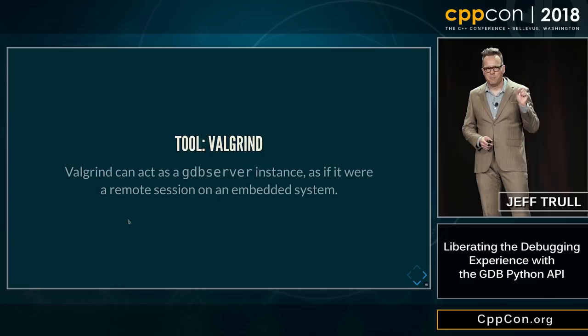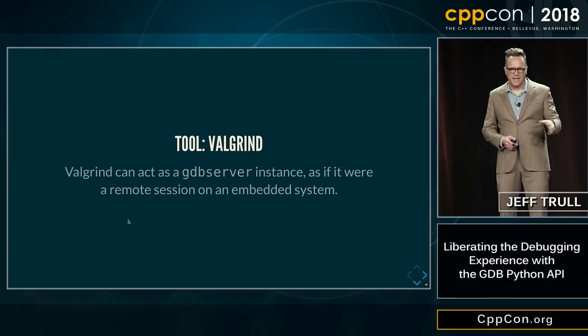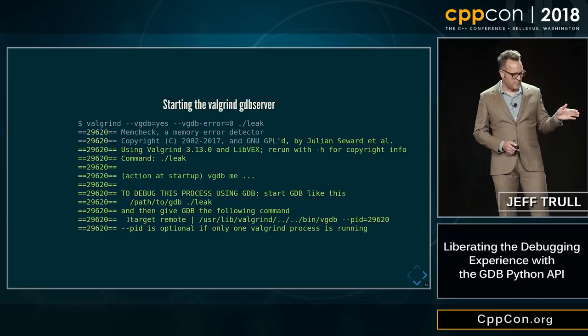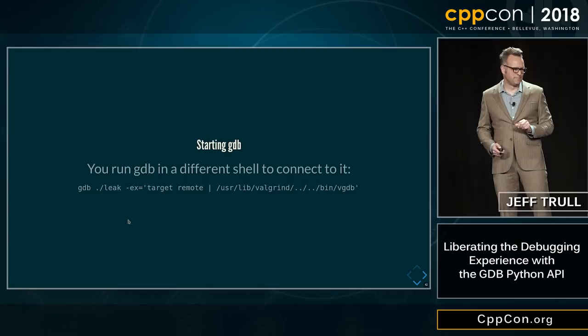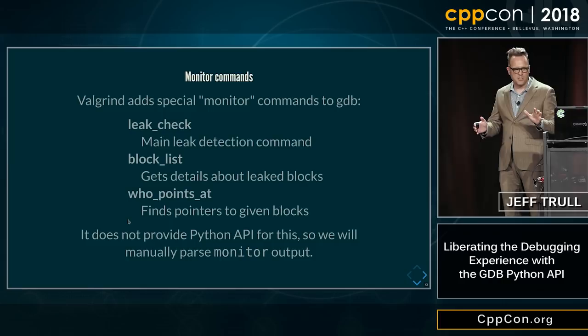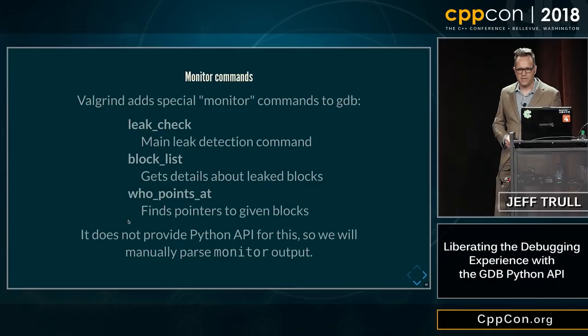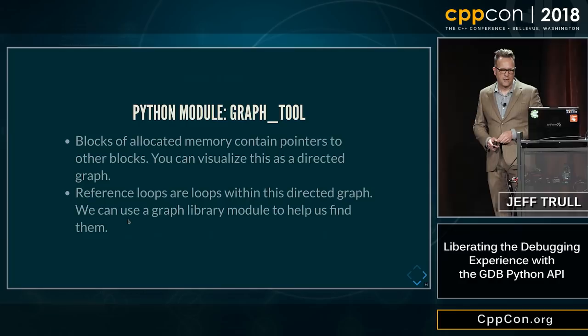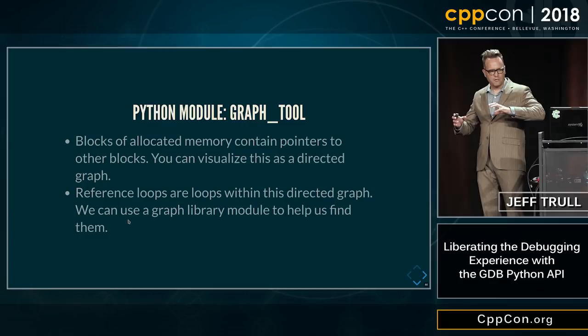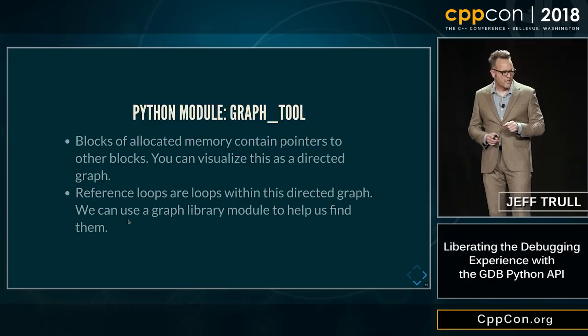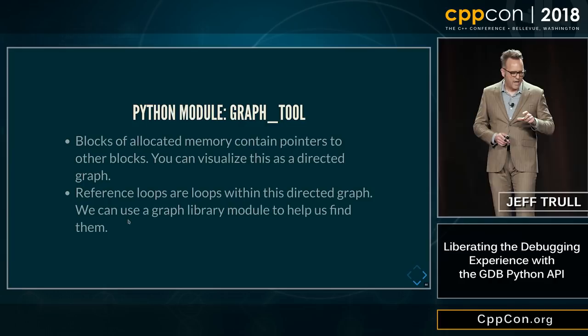Valgrind actually can mimic a GDB server, so you can connect to it with a GDB client, and then it adds features. We start Valgrind in server mode like this, then we start GDB and connect to that server. Once we do that, we have a regular-looking GDB except we now have extra commands available through 'monitor': leak check, block list, and who points at. Unfortunately, there's no Python API for these, so we're going to run gdb.execute and parse the output. Now we have, from the monitor commands, information on blocks of allocated memory and the pointers they have to other blocks.